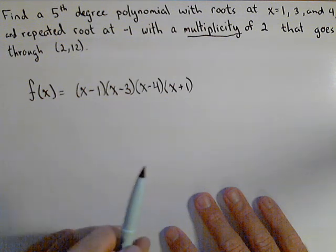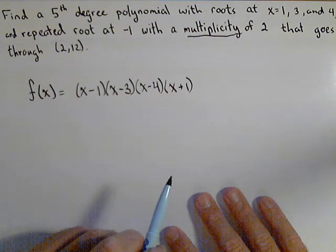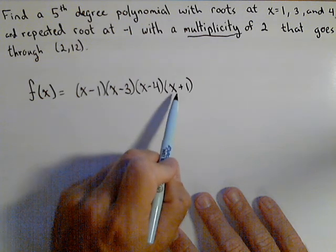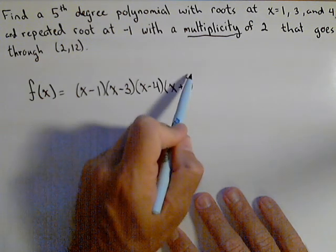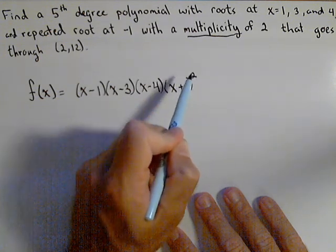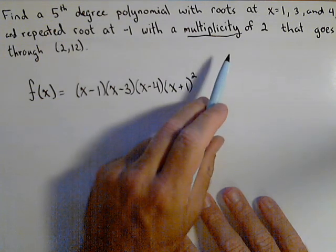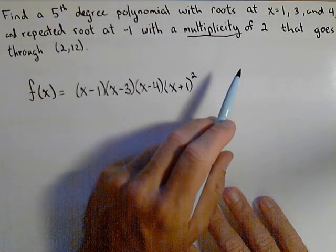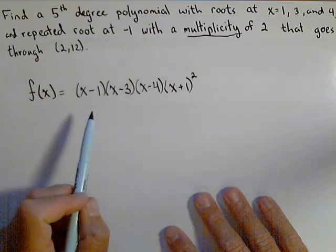That is only a fourth degree polynomial, but we said we were going to have a fifth degree. This root has a multiplicity of two. That means it's a repeated root, which means the factor's repeated two times. The multiplicity tells us how many times it's repeated.